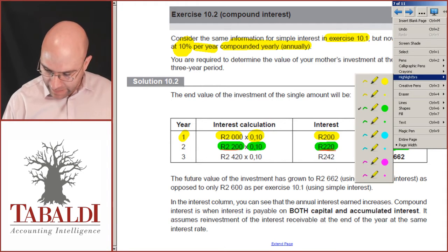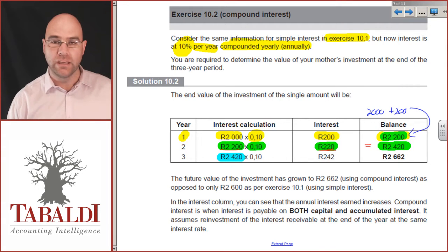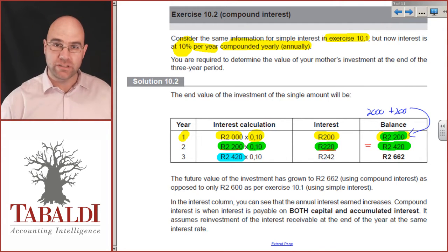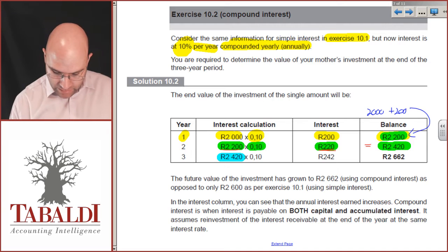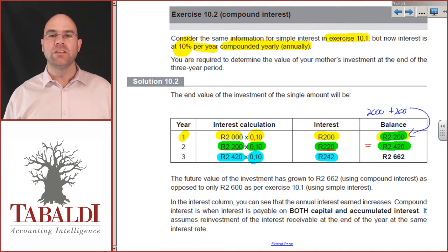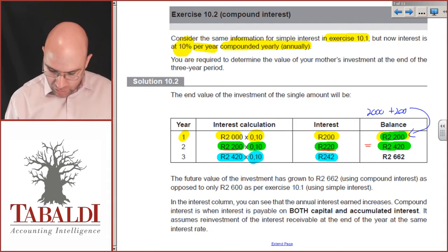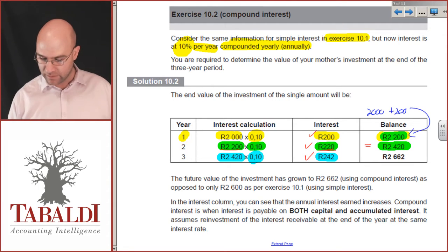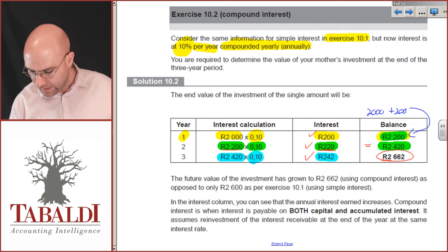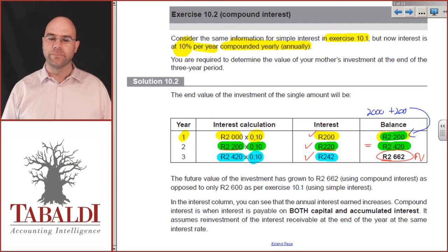Once again, I capitalize the interest — now I'm on 2,420 earning interest on interest on interest — times 10% gives me 242. You've heard the words 'power of compounding': in three years I've gone from earning 200, to 220, to 242 Rand of interest, and I end up with a future value of 2,662.